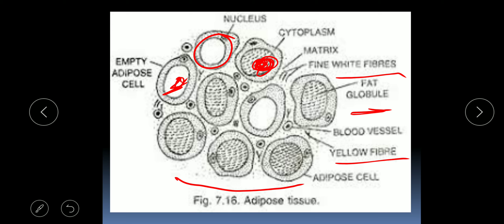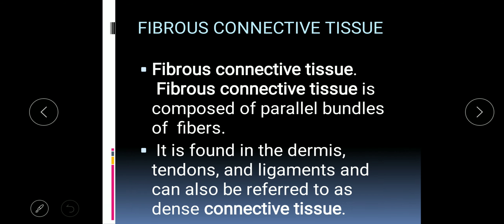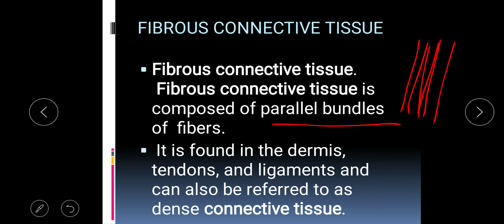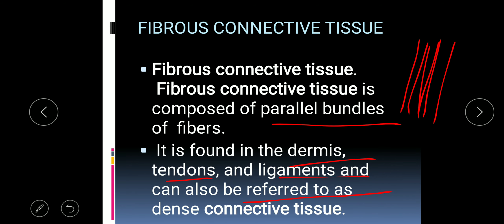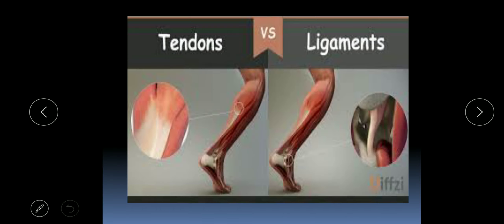Next is fibrous connective tissue, which is composed of parallel bundles of fibers. It is found in the dermis, tendons, and ligaments, and is referred to as dense connective tissue. The previous two — areolar and adipose tissue — are loose connective tissue, while fibrous connective tissue is the dense connective tissue. There are two basic examples: tendons and ligaments.